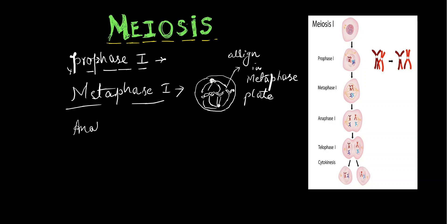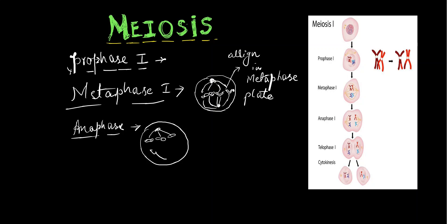Then we have Anaphase 1. In Anaphase 1, the non-sister chromatids — the homologous chromosomes — separate from each other and move to the opposite poles.